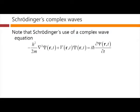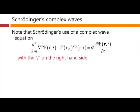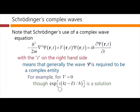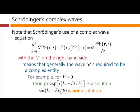Also note that Schrödinger's use of a complex wave equation — the i over here — means there was no i anywhere in the classical equation. This means that, generally, the wave psi that is to be a solution of this equation has to be a complex entity. For example, for V equals 0, although the wave e to the ikz minus Et over h-bar (or minus omega t) is a solution, a sine wave is not a solution.